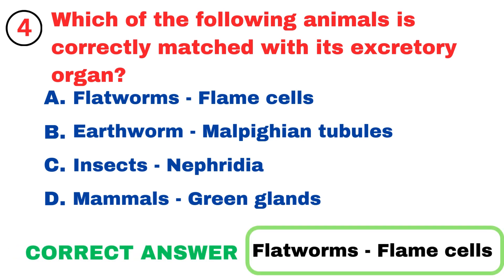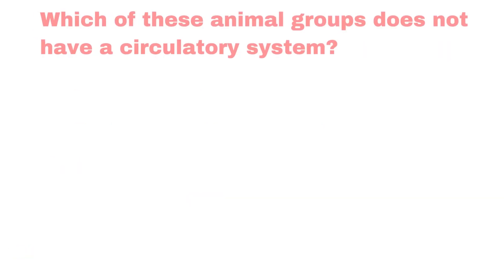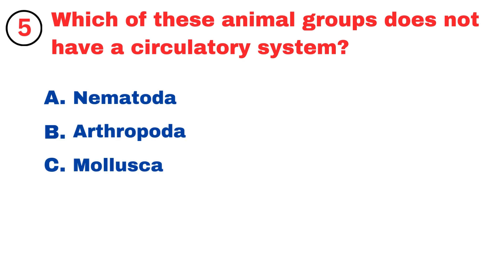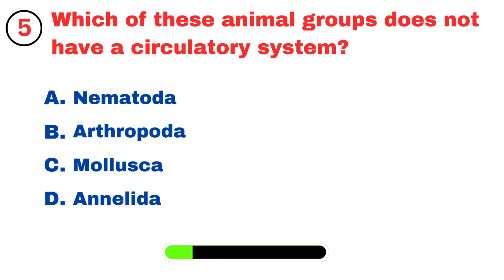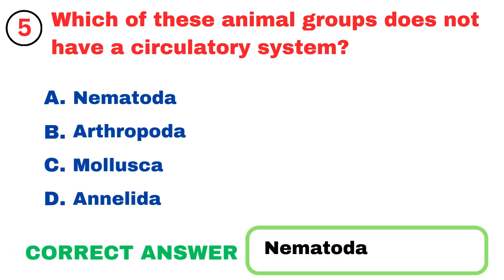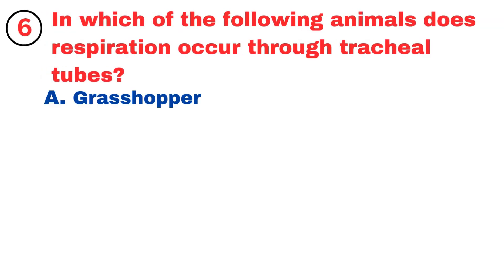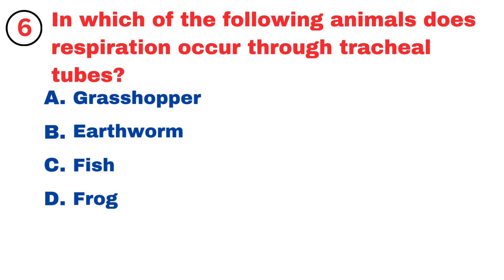Which of the following animals is correctly matched with its excretory organ? Flatworms — flame cells. Which of these animal groups does not have a circulatory system? Nematoda.